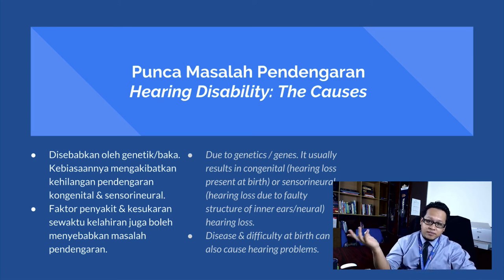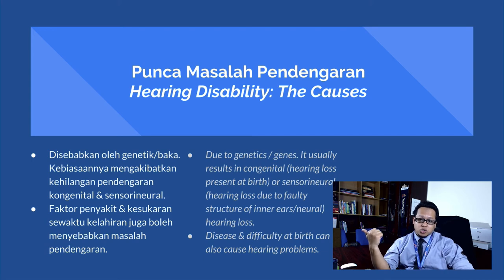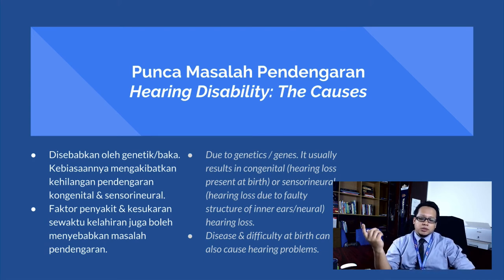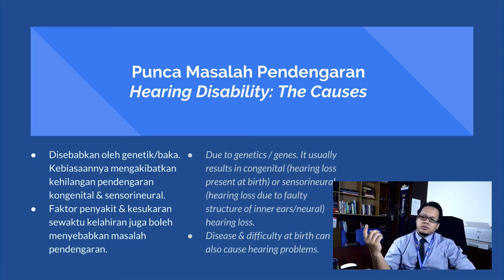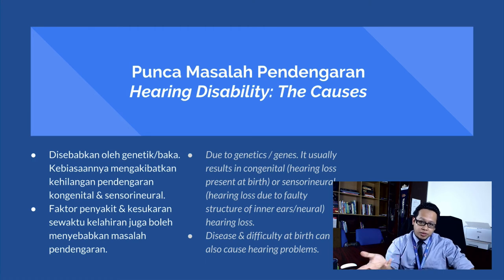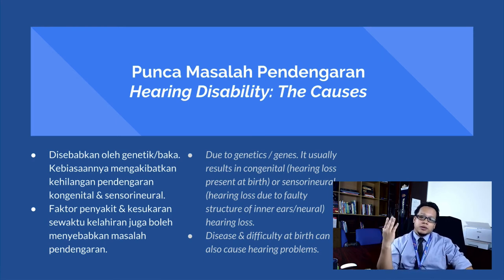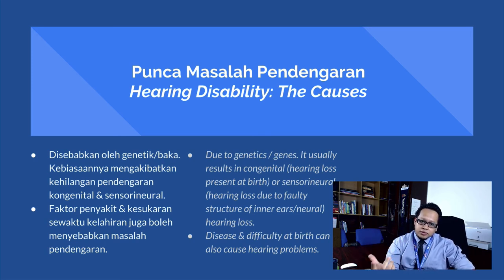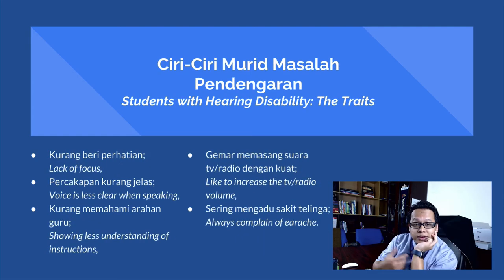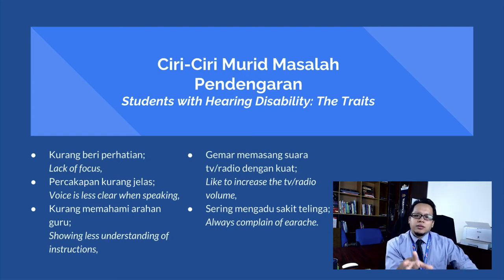Now let's look at what causes hearing impairment and deafness. The first cause is genes and genetics, which usually results in congenital or sensorineural hearing loss. Congenital means hearing loss present at birth, while sensorineural means hearing loss due to faulty structure of the inner ear. The other causes would be diseases that affect hearing and difficulties at birth.